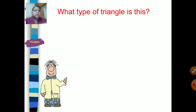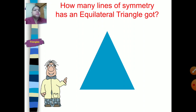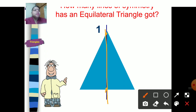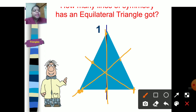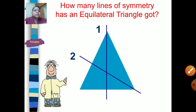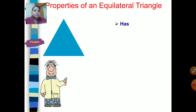Now let's discuss triangles. This is an equilateral triangle in which all three sides are the same and all three angles are also the same. To draw the lines of symmetry, from each vertex you join the midpoint of the opposite side. Doing this for all three vertices gives three lines of symmetry. So an equilateral triangle has three lines of symmetry.